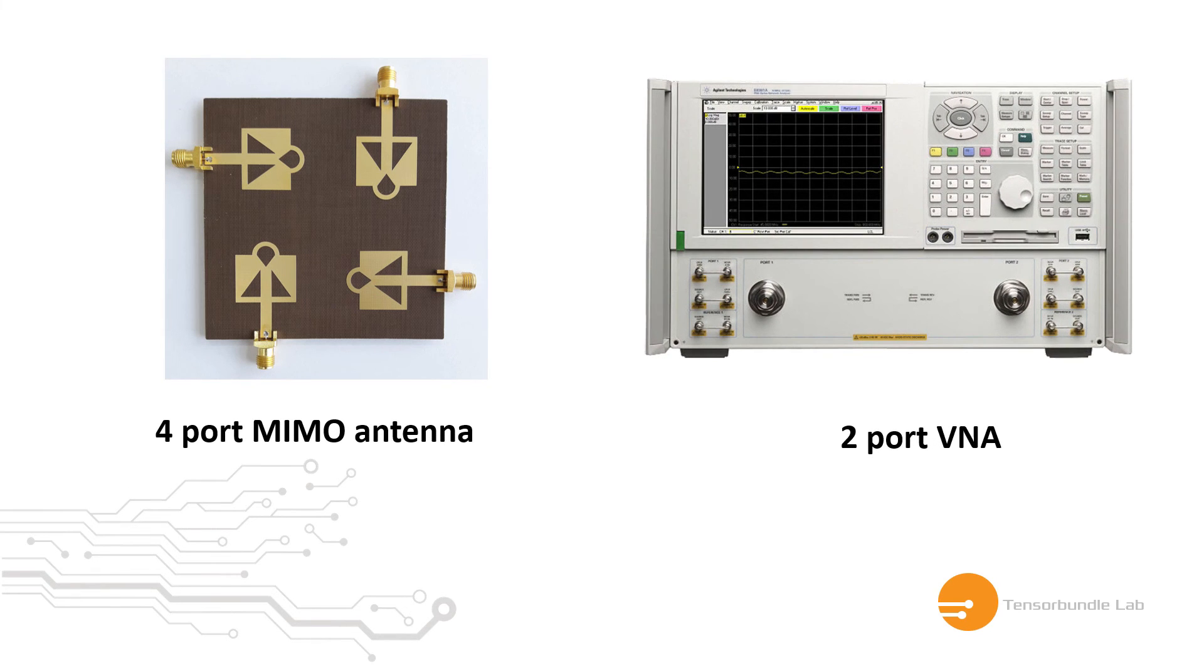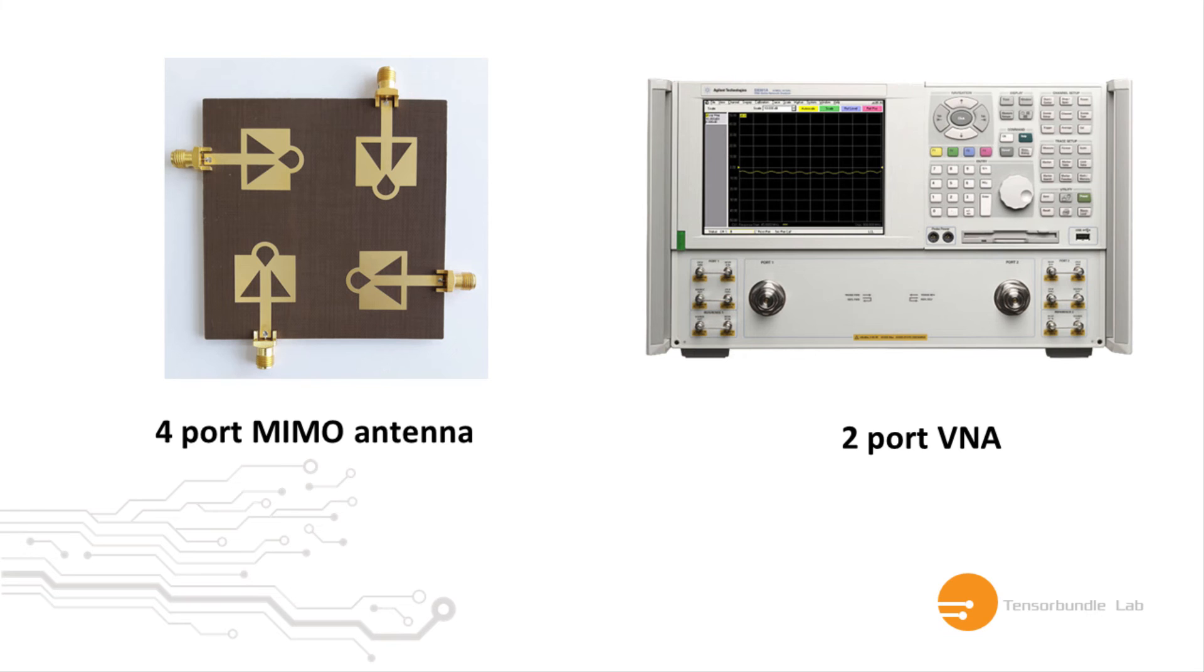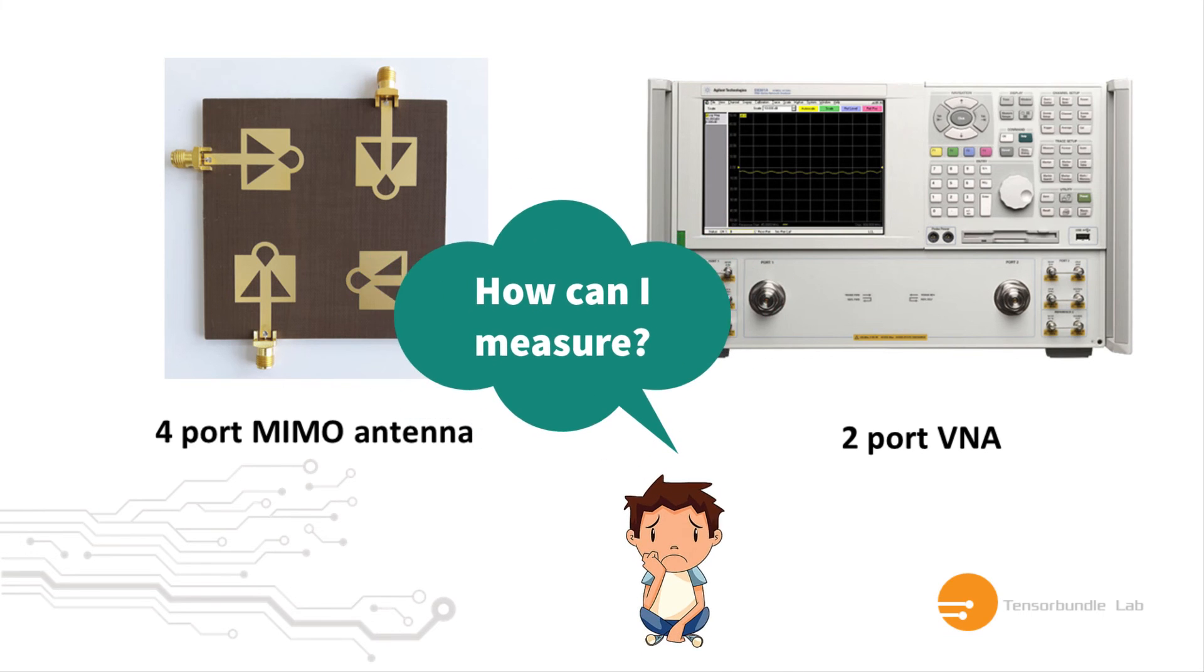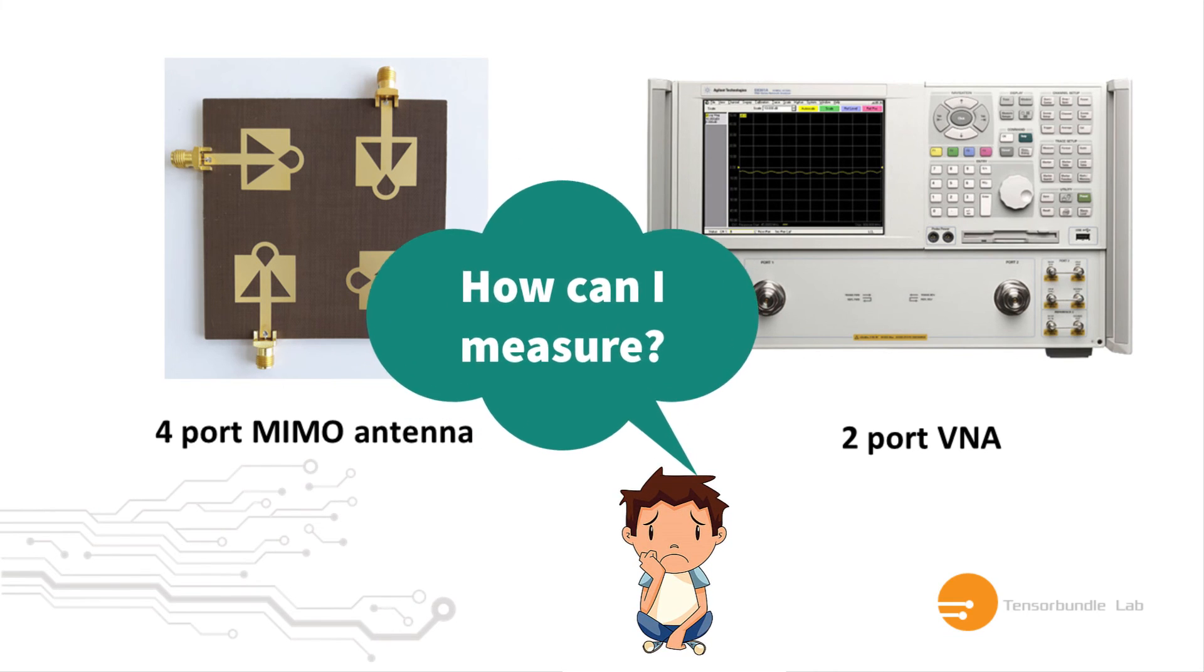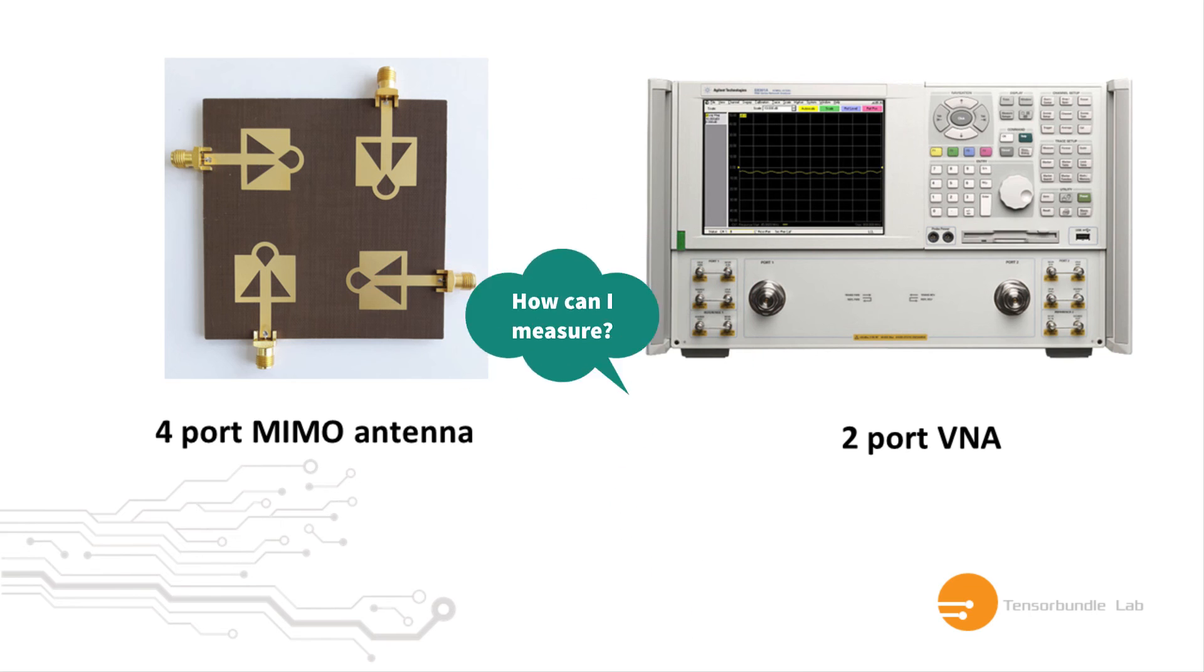If the MIMO antenna has more than two ports, for example four ports, and the VNA has only two ports, you can still measure that four port antenna using a two port vector network analyzer. But I'll show that in another video. Thanks for watching.